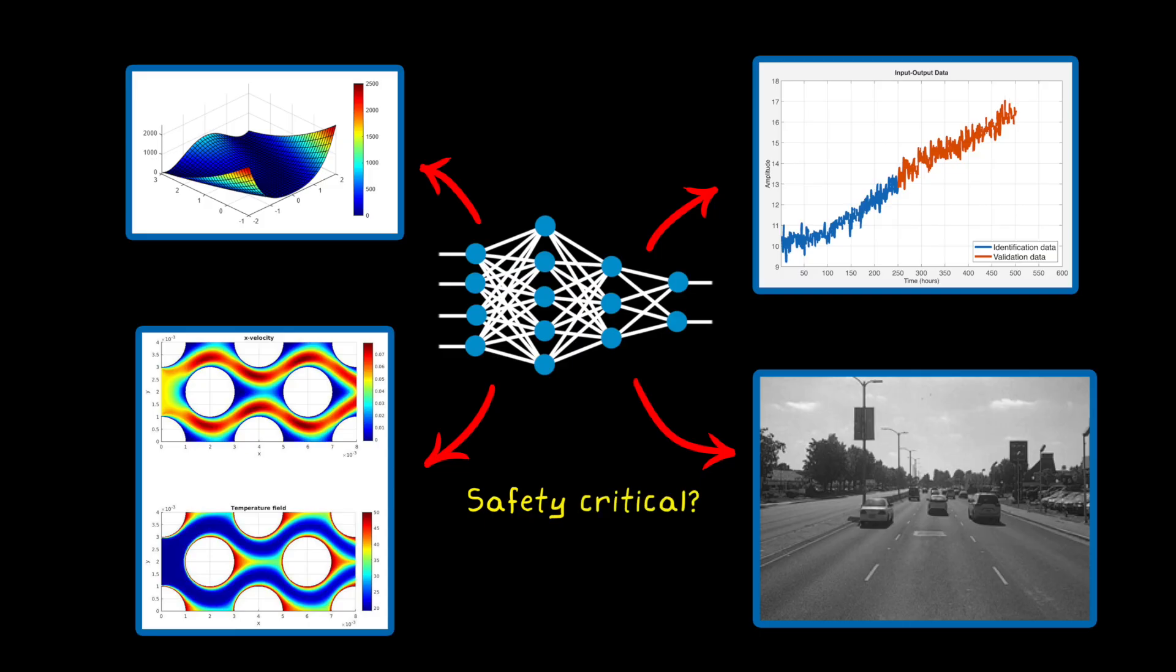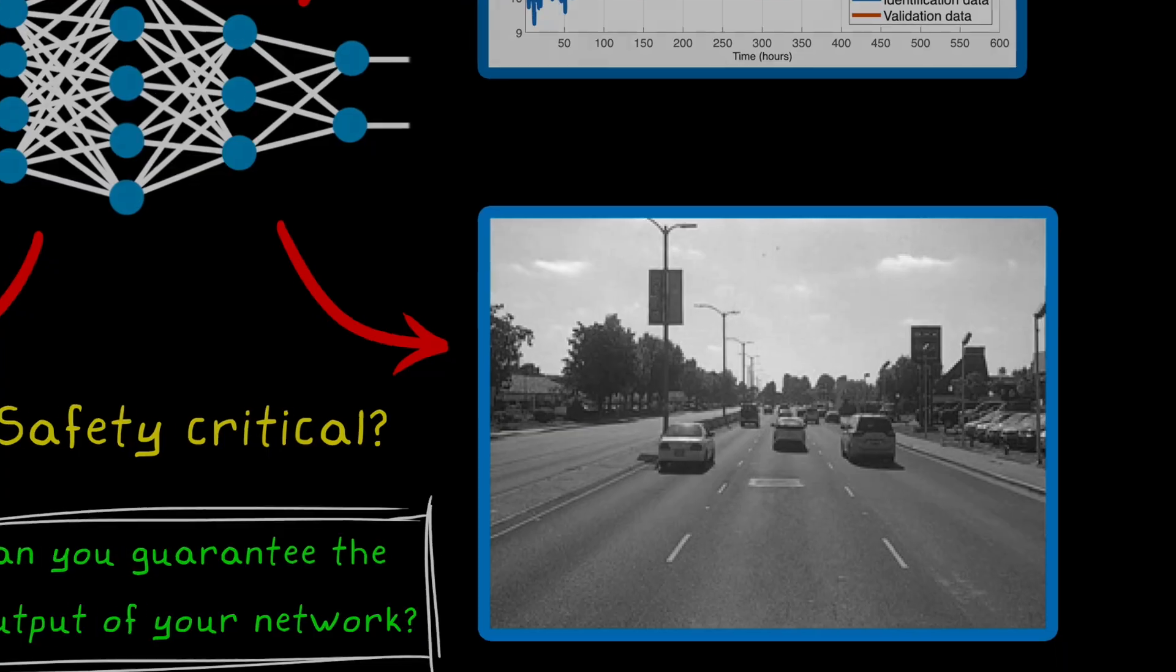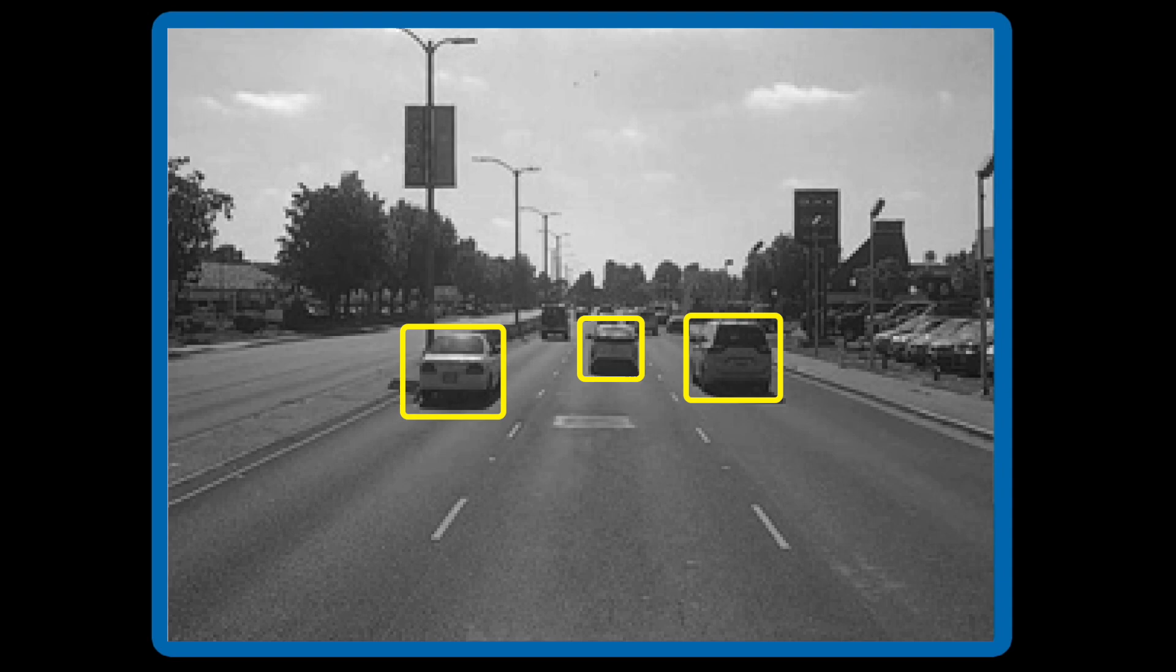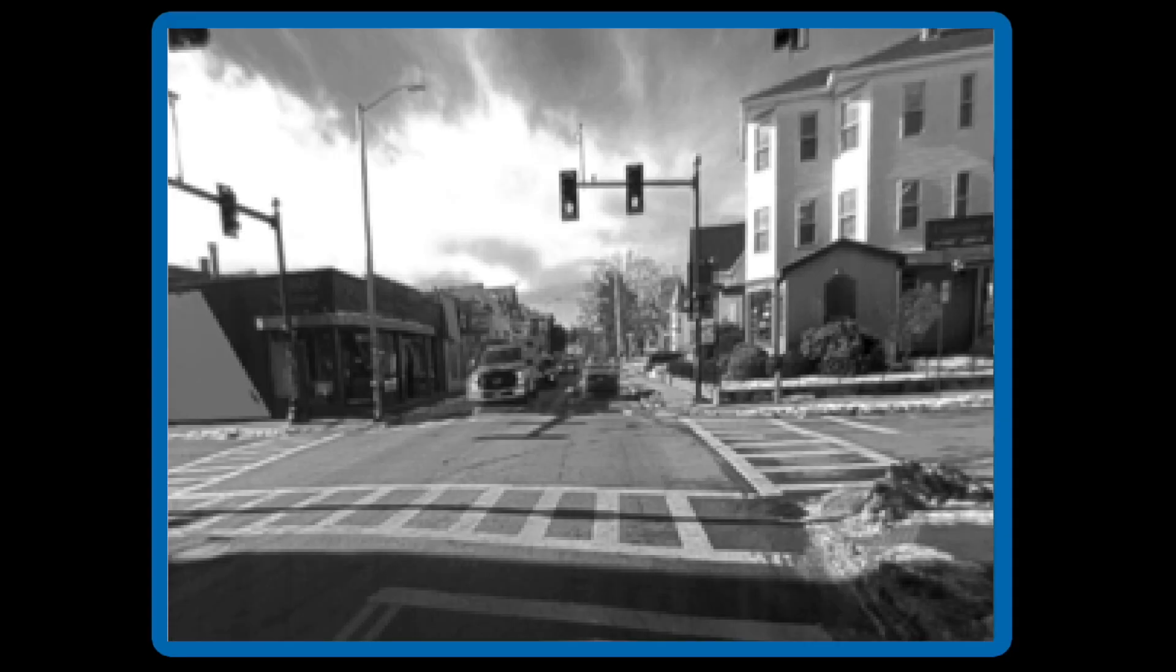But when it comes to safety critical systems, there's a big question, and that is can you actually guarantee the output of your network? Take an image classifier for an autonomous vehicle as an example. Let's say that you test your network with this input image, and it can correctly identify the vehicle, which then allows the rest of the system to safely respond to it.